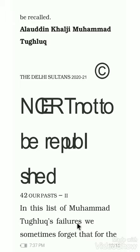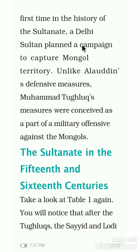In the list of Muhammad bin Tughlaq's failures, we sometimes forget that he was the first Delhi Sultan to plan a campaign to capture Mongol territory — earlier it was only the Mongols who attacked India. Unlike Alauddin Khalji's purely defensive measures, Muhammad bin Tughlaq conceived measures to counter-attack on the Mongols' path itself. This bold ambition should be credited to him.